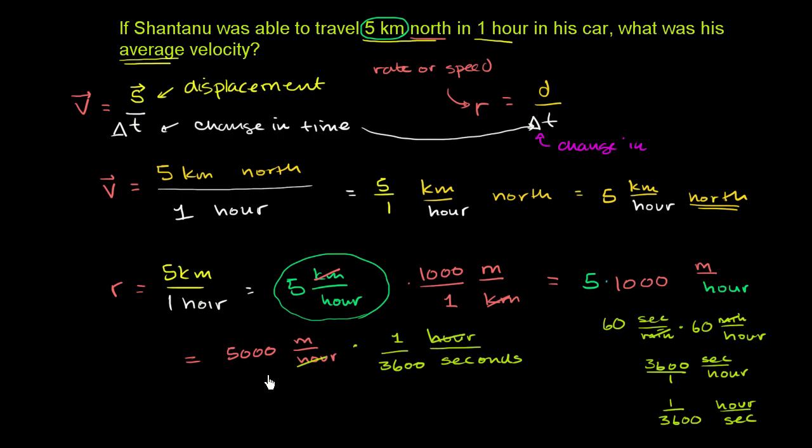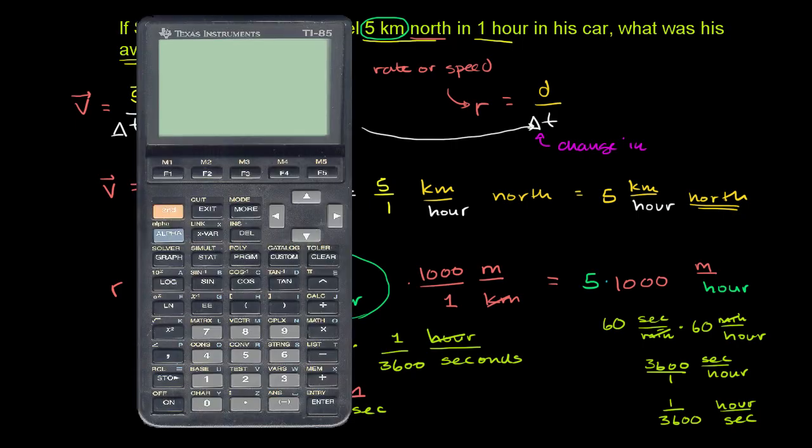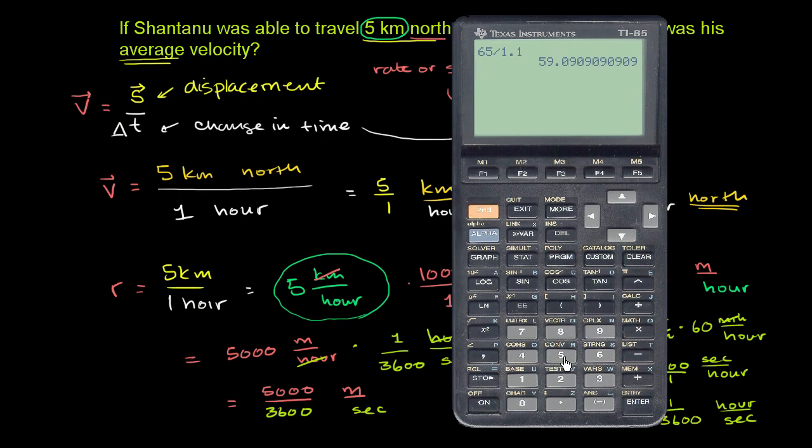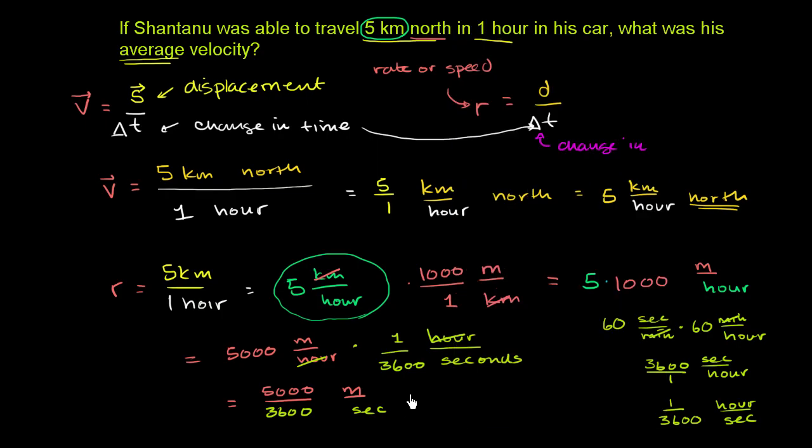And so now this hour cancels out with that hour, and then you multiply or appropriately divide the numbers right here. And you get, this is equal to 5,000 over 3,600 meters per second. And if we divide both the numerator and the denominator, well, I could do this by hand, but just because this video is already getting a little bit long, let me get my trusty calculator out, just for the sake of time. 5,000 divided by 3,600, which would be really the same thing as 50 divided by 36, that is 1.39. So this is equal to 1.39 meters per second.